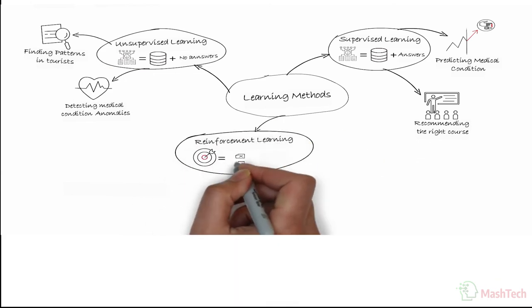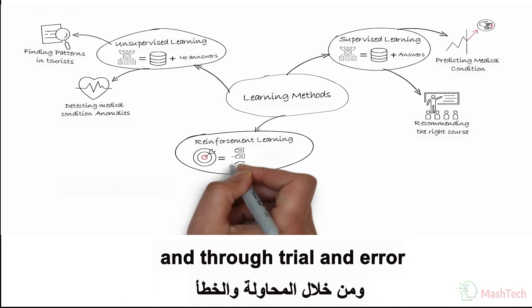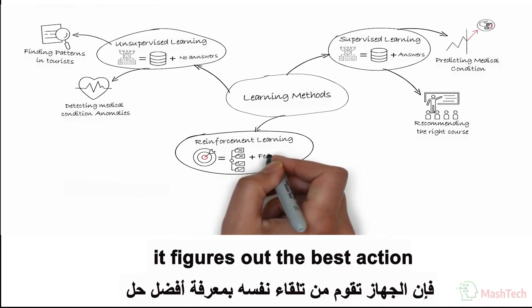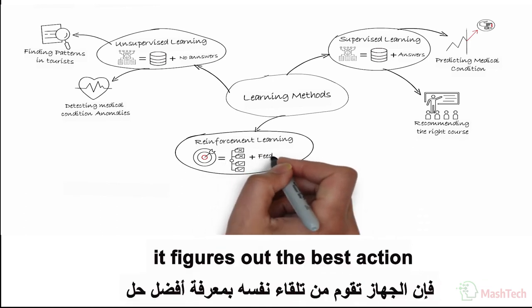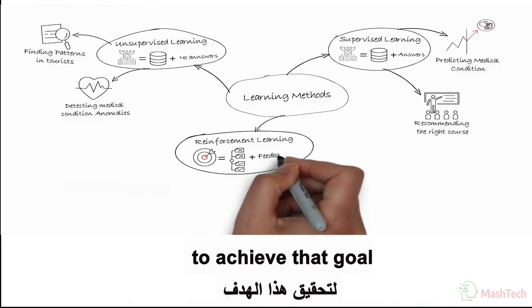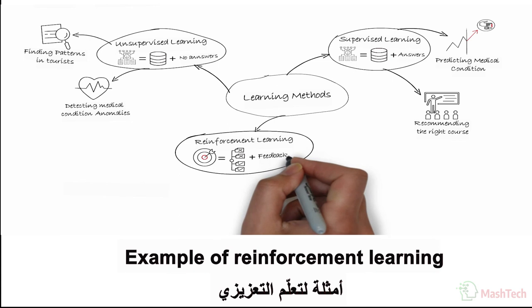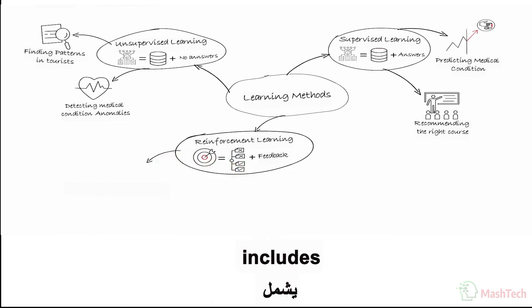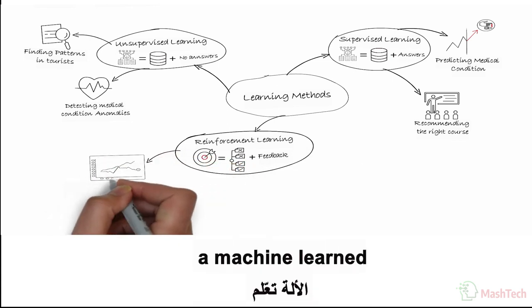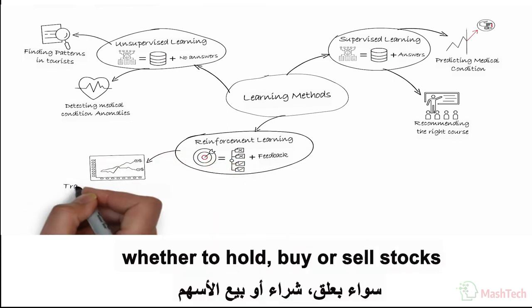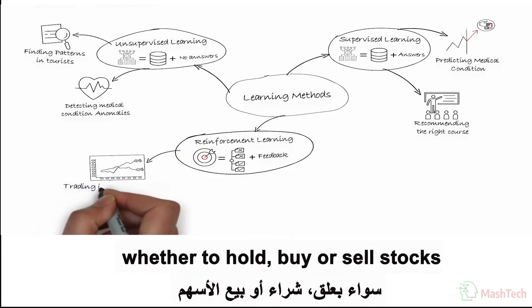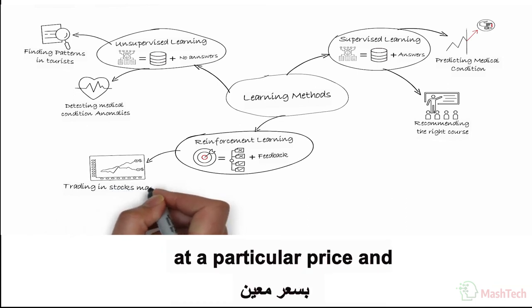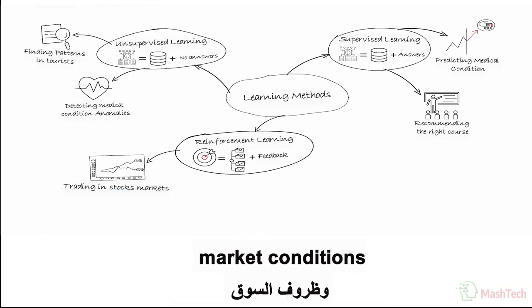The third is reinforcement learning — here the machine is given a goal and through trial and error and receiving feedback, it figures out the best action to achieve that goal. An example includes in trading, where a machine learns whether to hold, buy, or sell stocks at a particular price and market conditions.